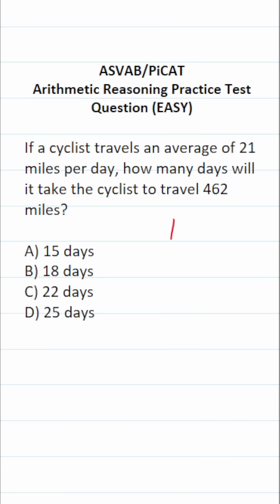So to figure this one out, we're going to do some simple long division. That is to say, we're going to do 462 divided by 21. Now, on the ASVAB and PyCat, you're not given a calculator or reference sheet, so you have to be able to perform long division by hand.